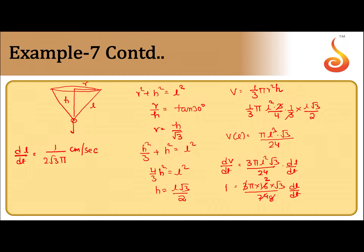To recap: we used the Pythagorean theorem r² + h² = l², and the semi-vertical angle α = π/6, so r/h = tan(π/6) = 1/√3, giving r = h/√3. Substituting, we expressed l in terms of h and then r and h in terms of l. We computed the volume as a function of l, differentiated both sides with respect to t, and obtained dl/dt = 1/(√3·π) centimeters per second.